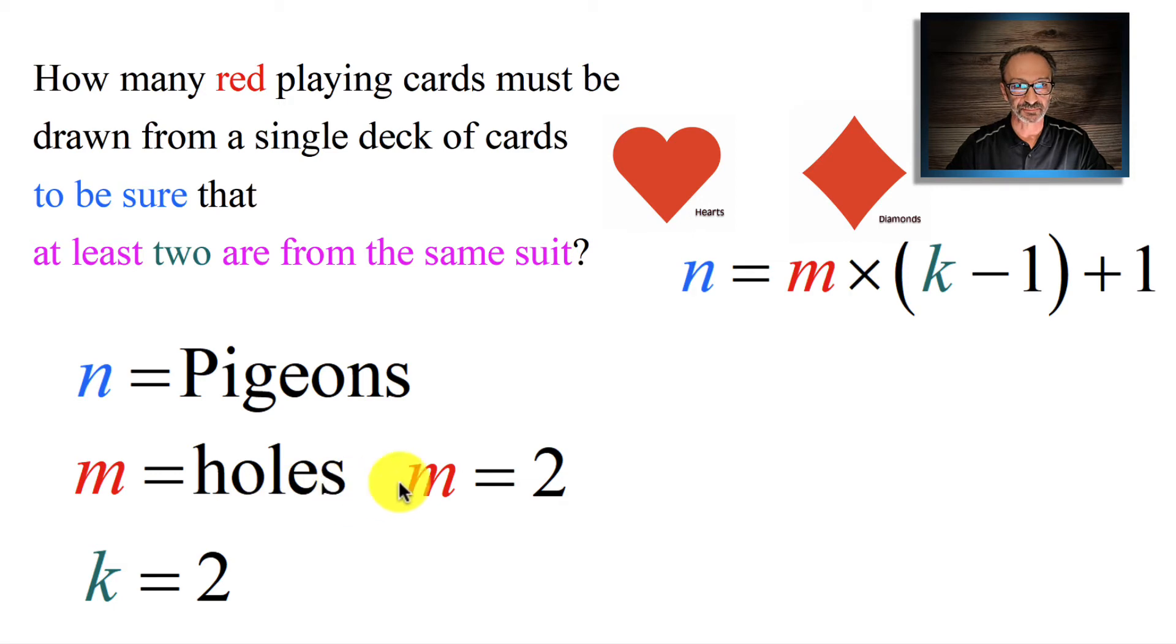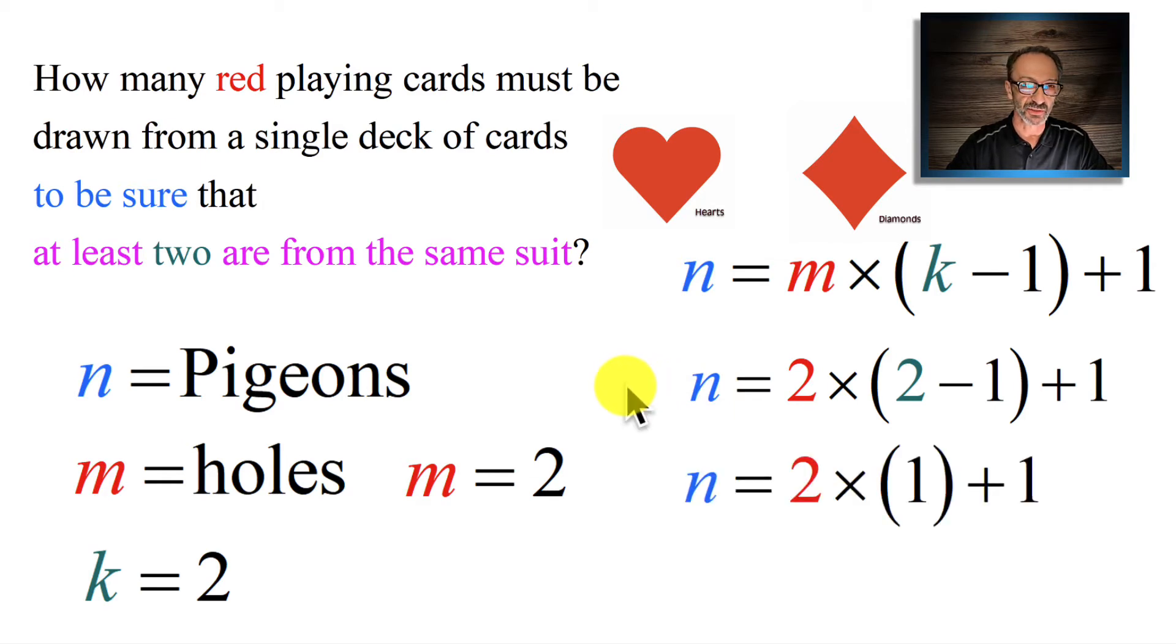K is 2. To have at least 5, K will be 5, and that's how you identify what's K. So you're going to subtract 1 from K. In this case, it's going to be 2 times 2 minus 1, and 2 for the number of holes, 2 for the number that you want to guarantee. And we need to know N - how many pigeons, in this case how many cards.